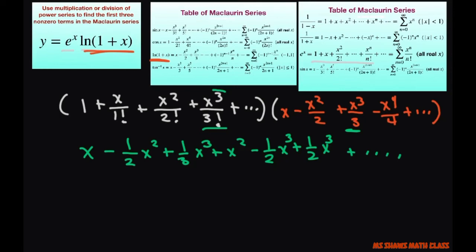All right. Now, simplifying that, this is going to give us x plus 1 half x squared plus 1 third x cubed plus dot, dot, dot. And that's it.